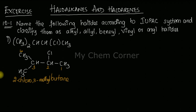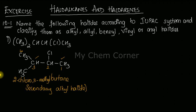So the IUPAC name is 2-chloro-3-methylbutane. Always go back and verify you've named everything in the compound. For classification: the carbon bearing chlorine at position two has one alkyl group on each side — it is bonded to two alkyl groups — therefore this is a secondary alkyl halide.